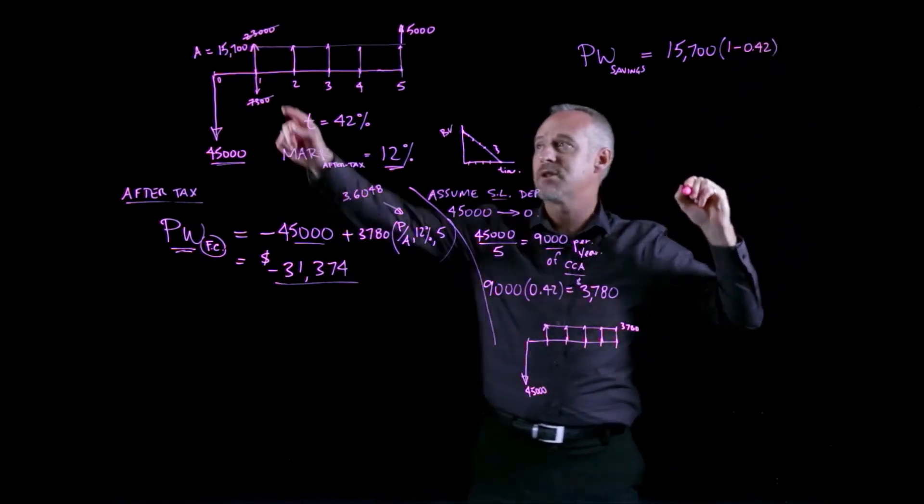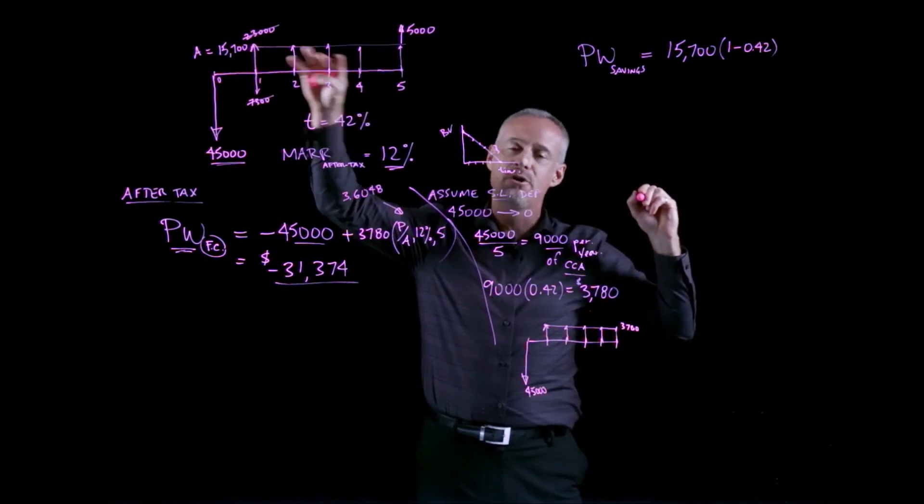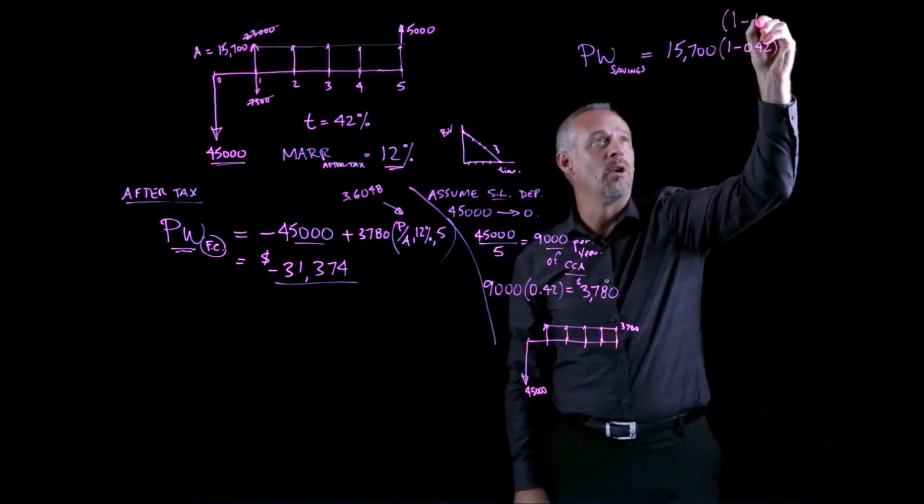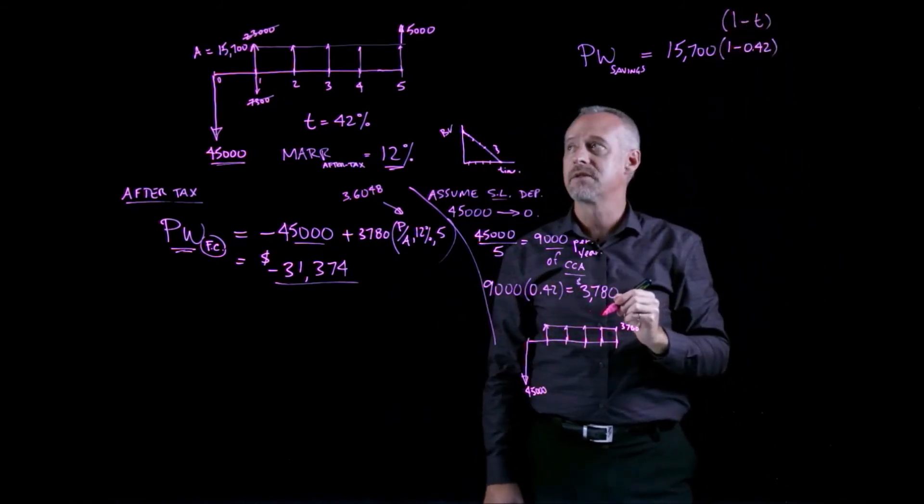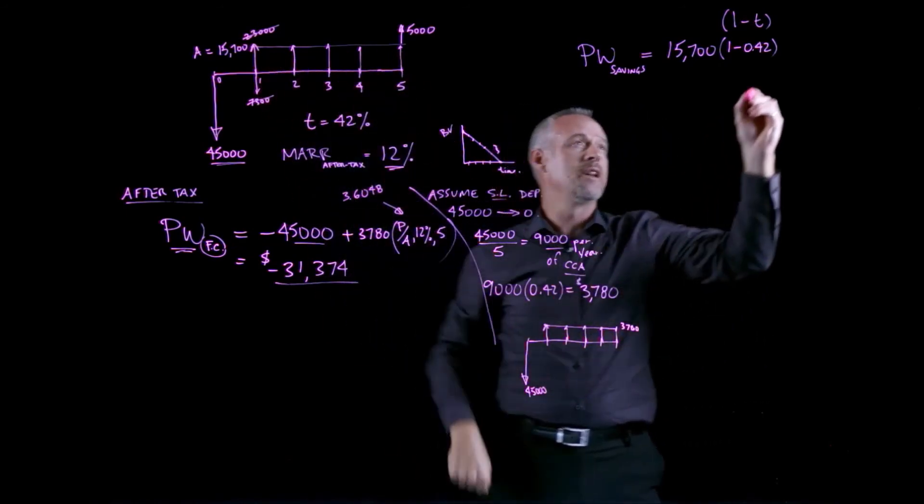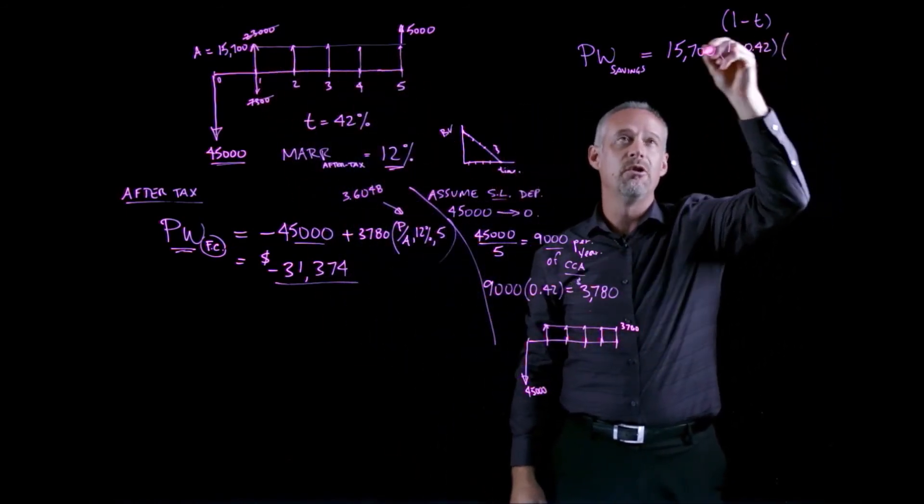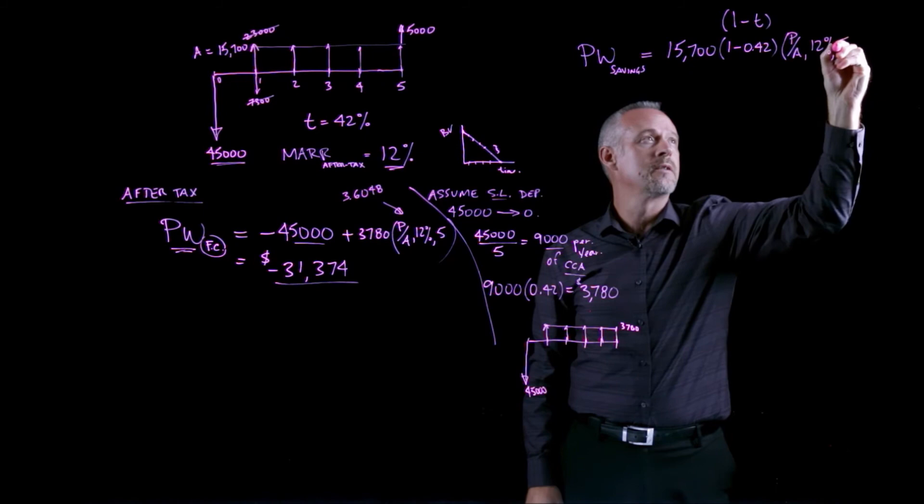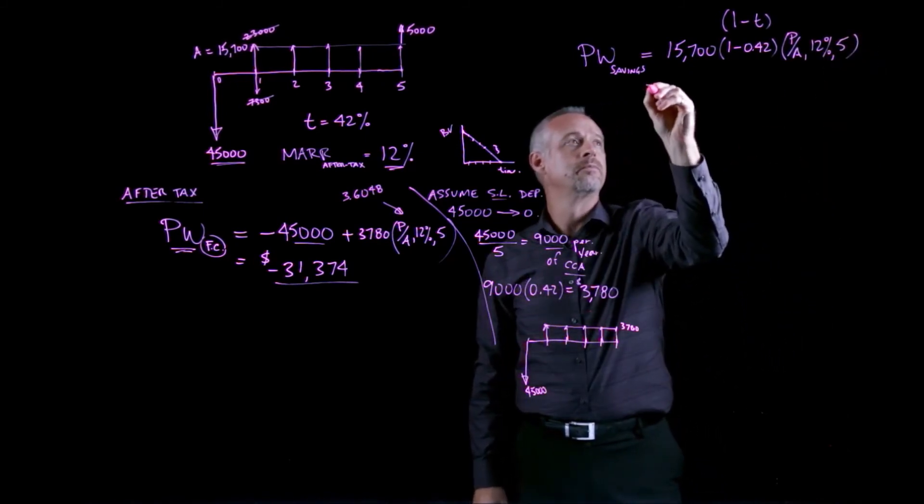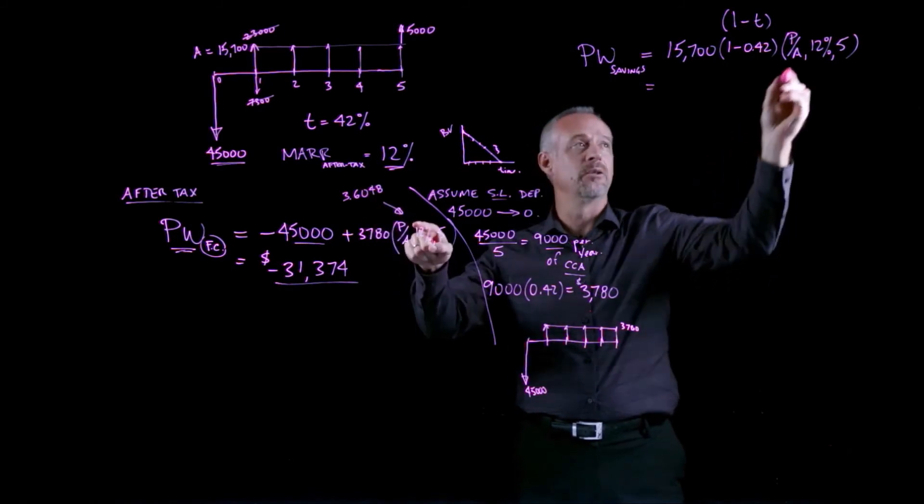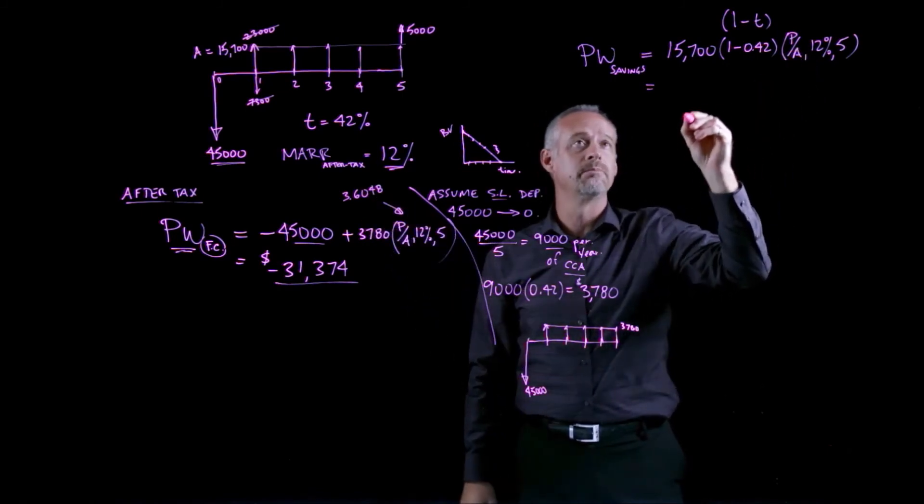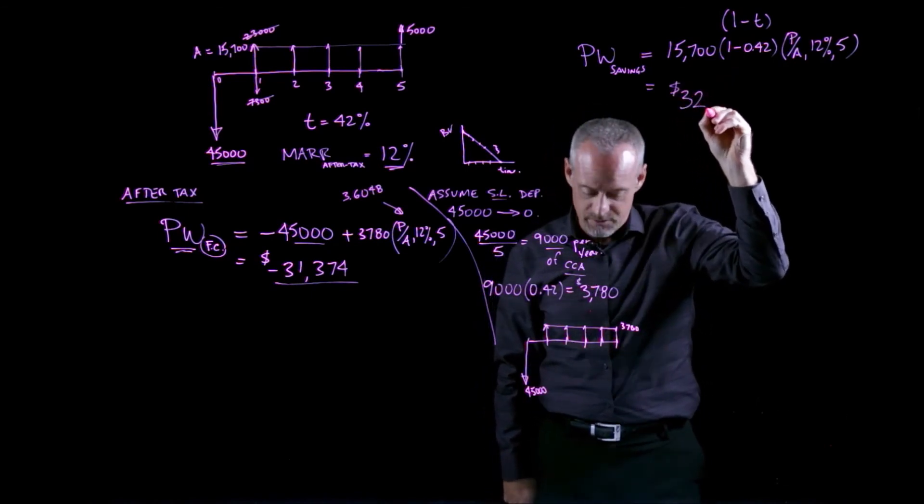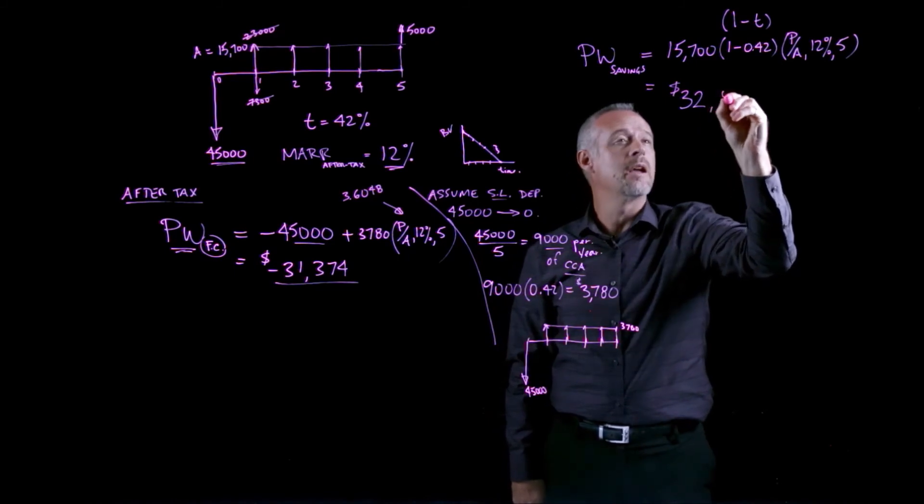So for any cash flows, any before-tax cash flows that occur during the project, we multiply by 1 minus the tax rate, and I'll write that here, 1 minus T, in order to convert that to after-tax. But it occurs every year, so really it's an annuity, and to convert this to the present worth, I'll use the P given A factor, 12%, and N equal to 5. And the P given A factor is the same factor that's that 3.6048, and if you work this out, you should arrive at a value of $32,825.